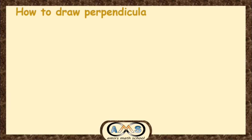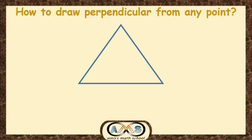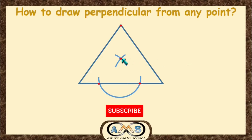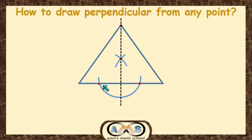First, let's see how to draw a perpendicular from any point. This is a triangle and we are going to draw the perpendicular from this point to a side. Taking this point as the center and a radius greater than the distance to the line, draw one arc. This arc intersects the line at two points. Taking the first intersection point as the center with any radius, draw one arc. Then taking the other intersection point as the center with the same radius, draw another arc on the same side. We get one intersecting point. Joining this intersection point and the original point gives us the perpendicular line on this side.